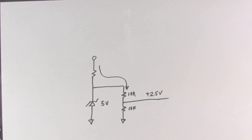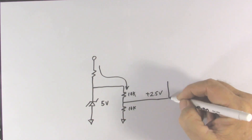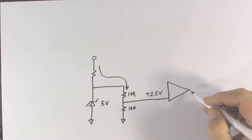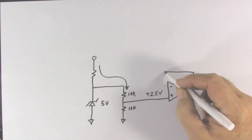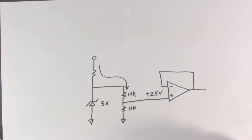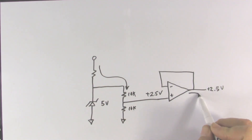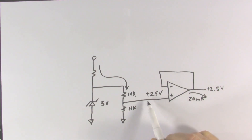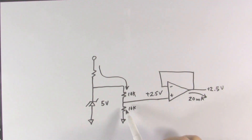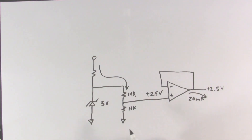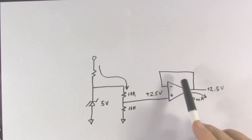Very simple — we run that through a unity gain amplifier, or a voltage follower. So we have 2.5 volts here, therefore we'll have 2.5 volts on the output, and this op-amp is quite capable of delivering 20 milliamps. The amount of current flowing into the op-amp has virtually no effect on the voltage divider — that remains at 2.5 volts. We're able to drive our other circuit that requires 20 milliamps at 2.5 volts using our voltage follower.